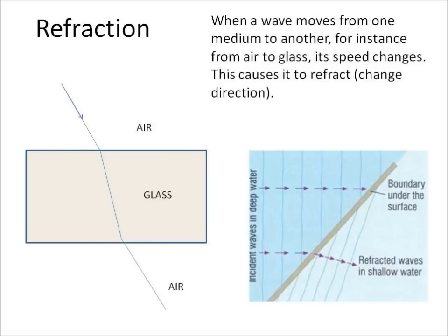Waves, as well as being able to reflect, can also refract. This happens when a wave moves from one medium, like air, to another medium, like glass. When that happens, the speed of the wave will change. The change in this speed causes it to refract, which means that the wave changes direction.